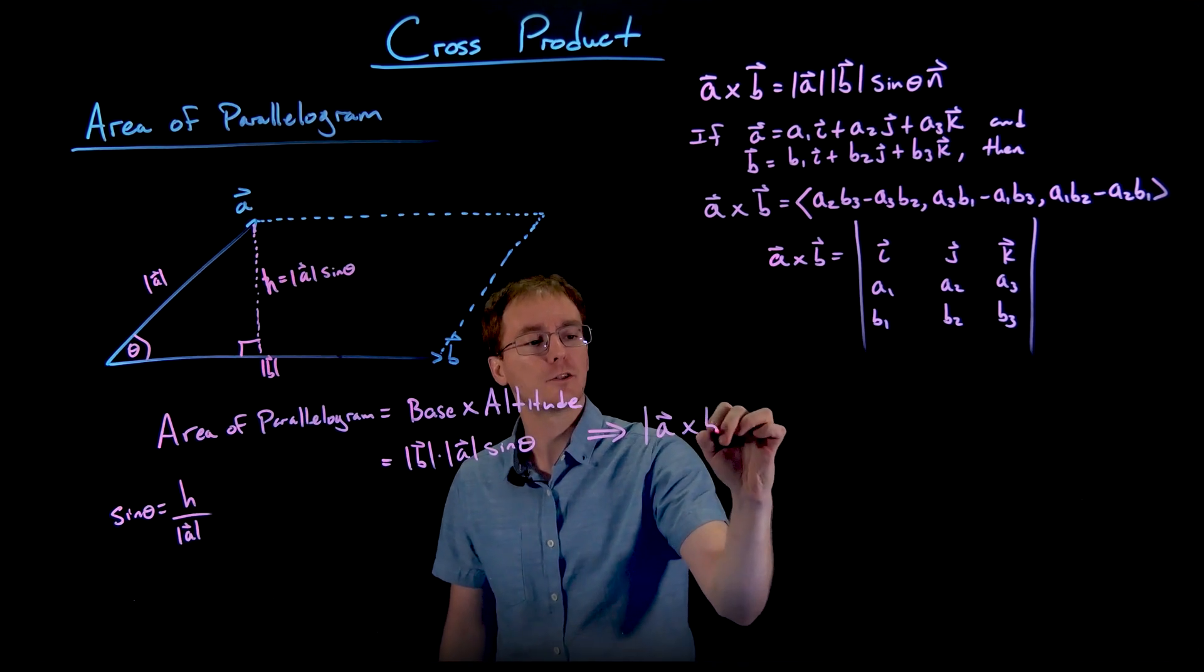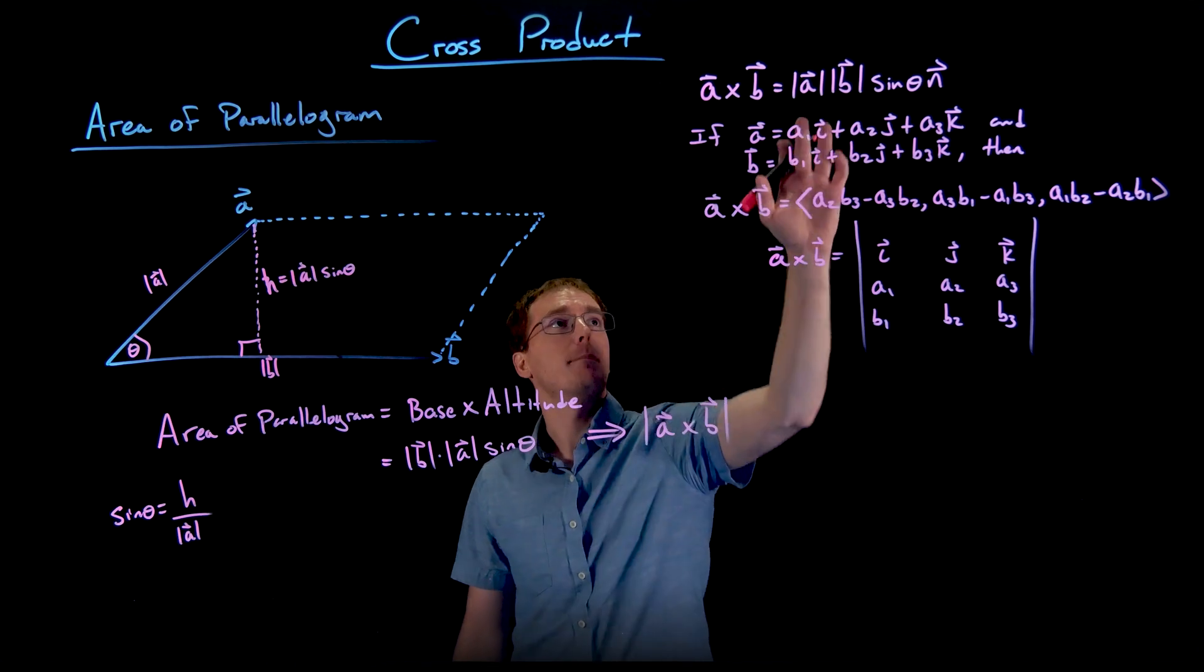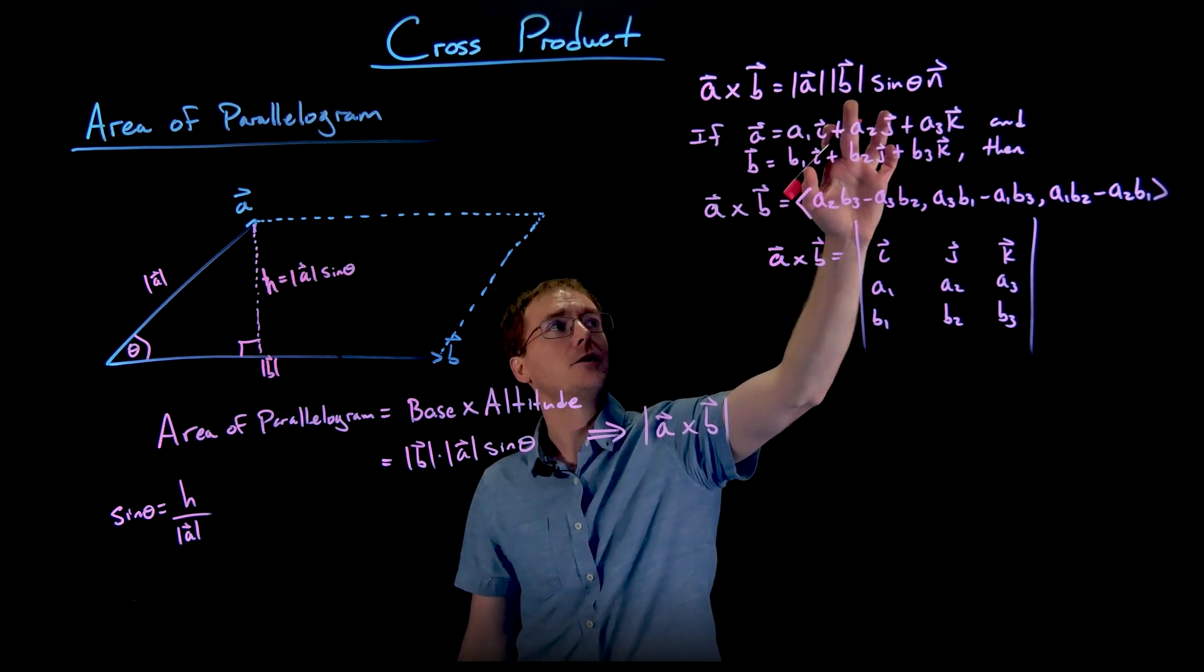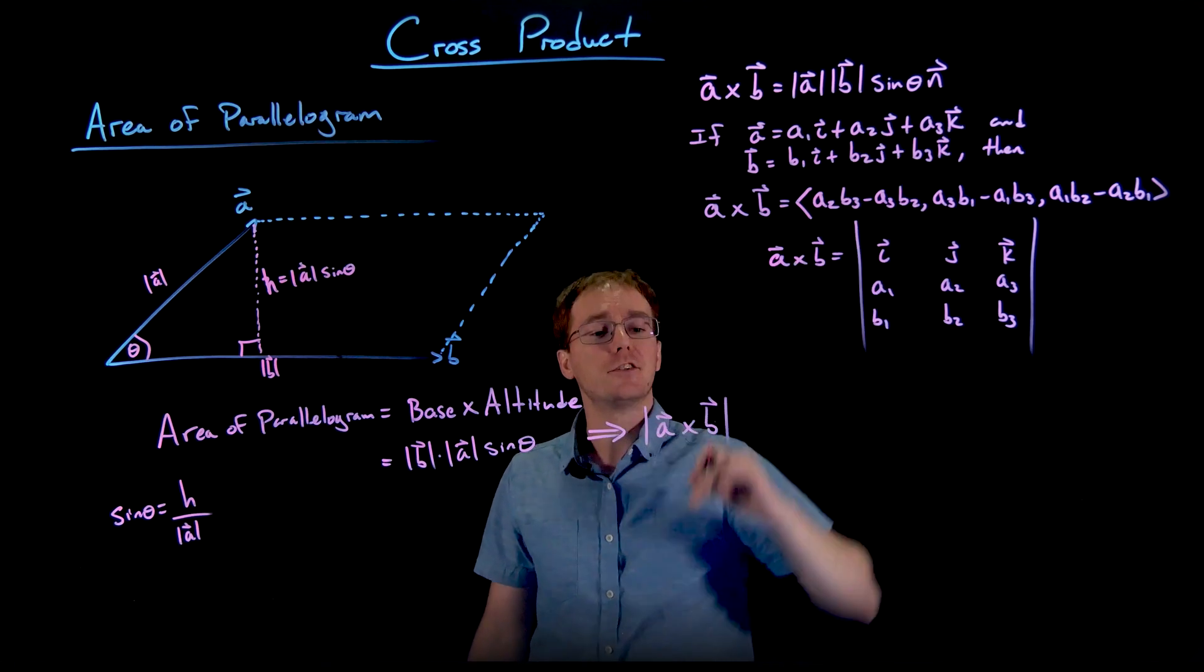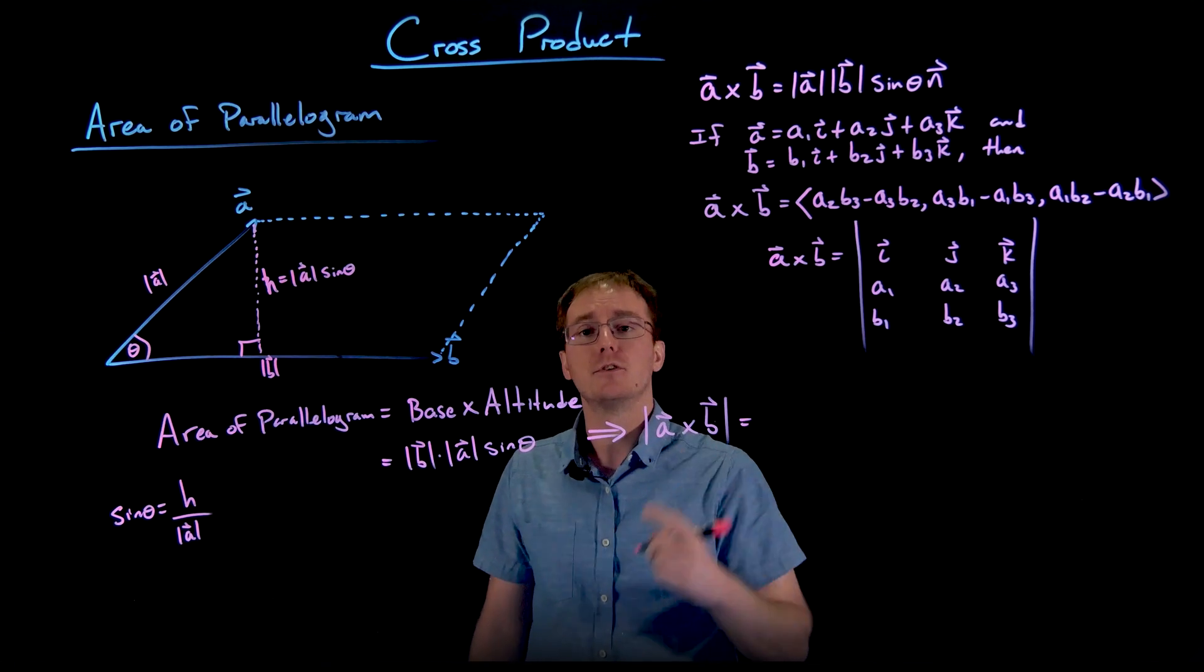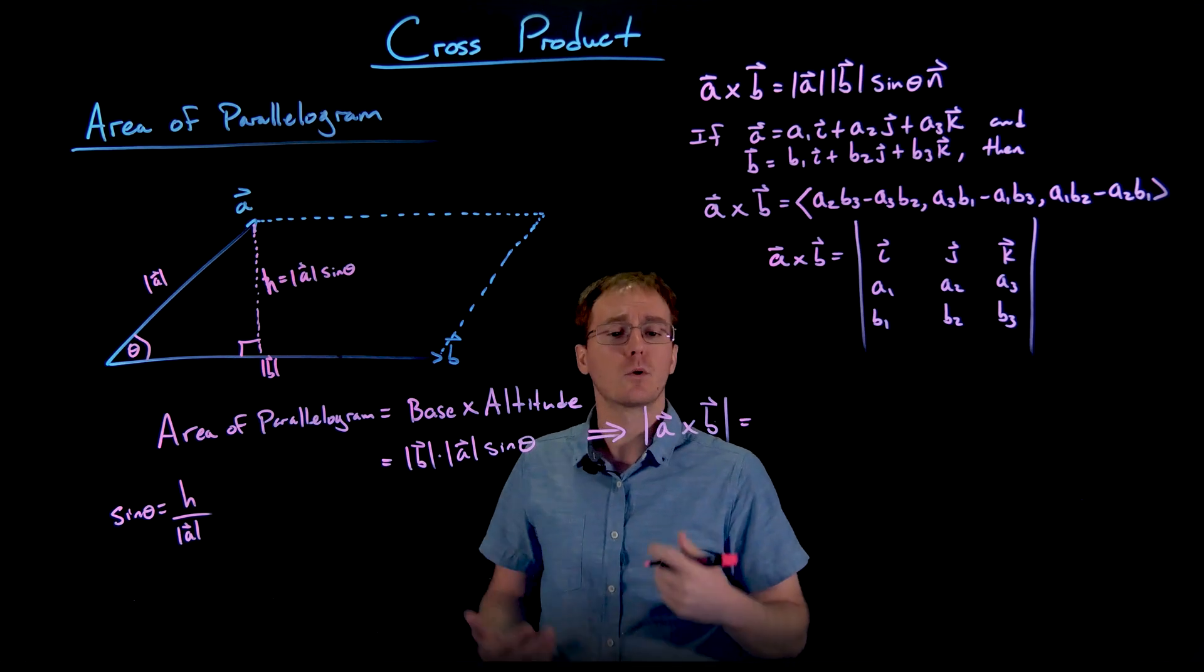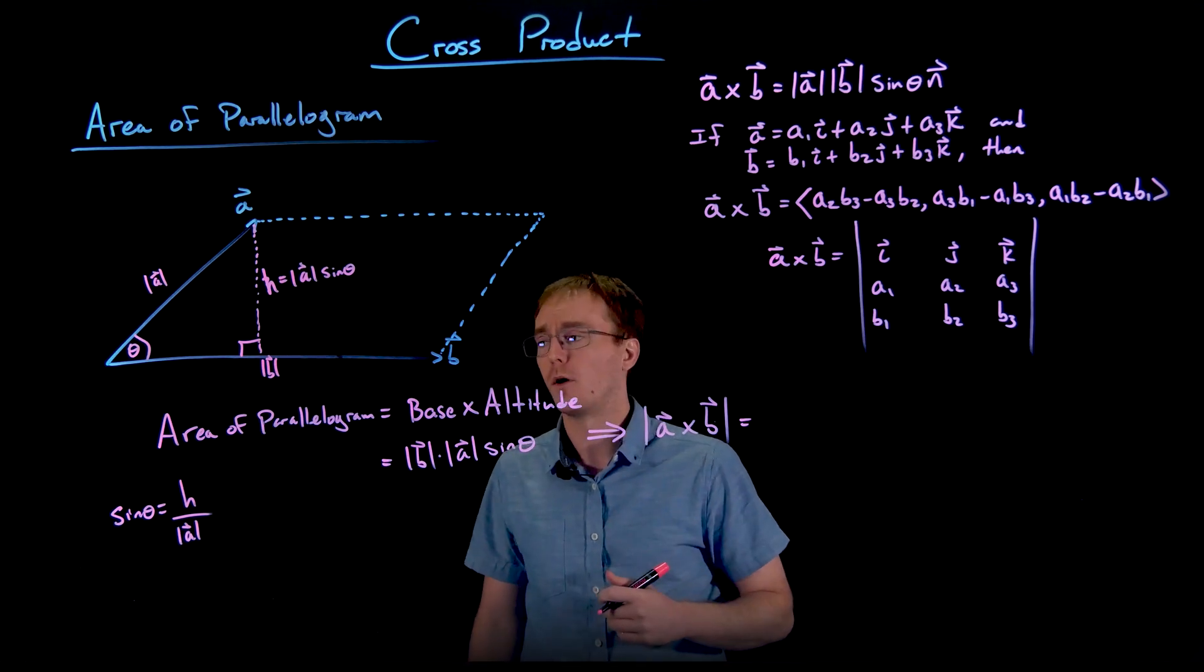of our cross product formula where you get the magnitude of A times the magnitude of B times sine of theta times the magnitude of N, but since N is a unit vector its magnitude is 1, so it just disappears or turns into a factor of 1.